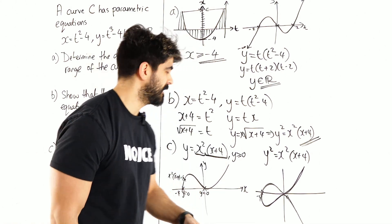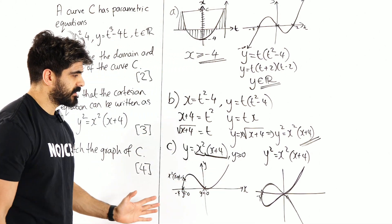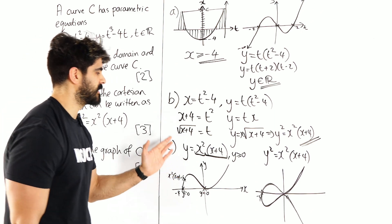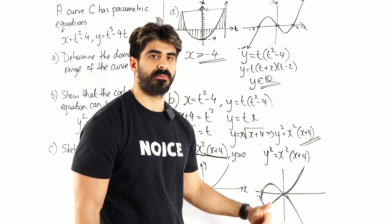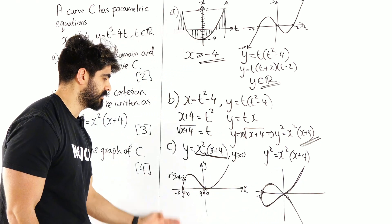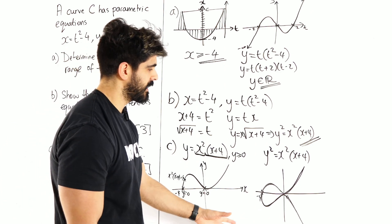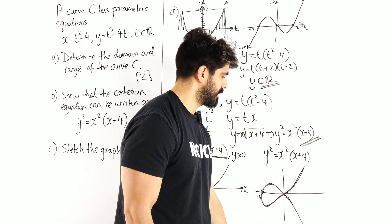So yeah. Hopefully that explanation makes sense. In terms of how we deal with the y compared to the y squared, it's simply just square rooting. So you're going to get the plus or minus version and you had to get rid of the negative. So kind of a bit like the modulus function, but not really.